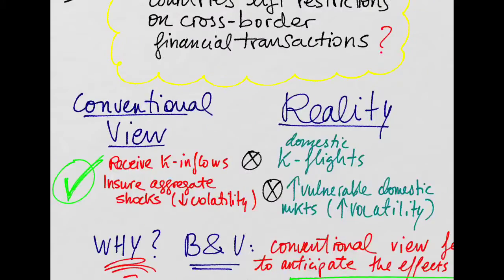But in reality, this is not what is seen in the data. When countries liberalize, sometimes we see domestic capital flights and increases in volatility. That means that domestic markets become more fragile after the opening.